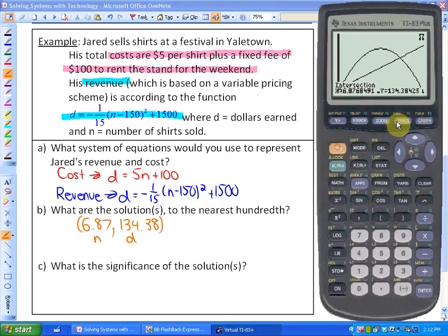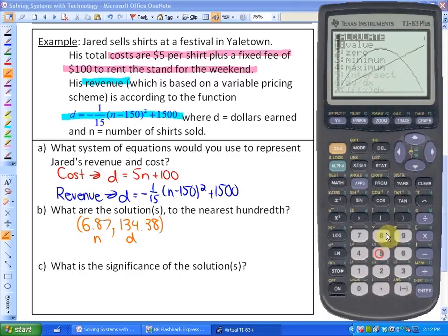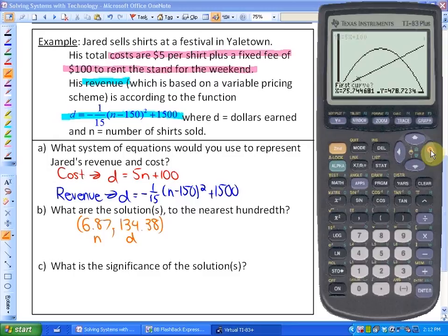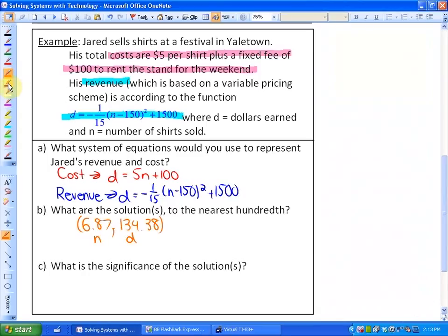In this next case, press second, trace, intersect, and go over to the second curve. Then we'll talk about how this applies to the word problem. Go close to that intersection, hit enter, enter, enter, and in this case we have the solution 218.12 and 1190.62.